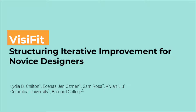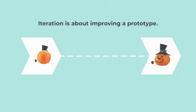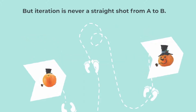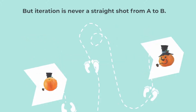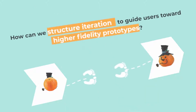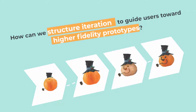Visifit: structuring iterative improvement for novice designers. Iteration is about improving a prototype, but iteration is never a straight shot from A to B. How can we structure iteration to guide users towards higher fidelity prototypes?